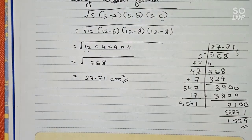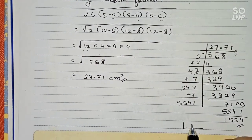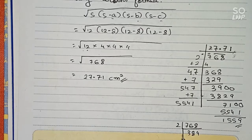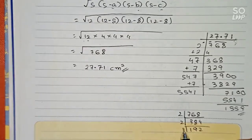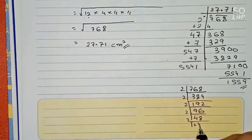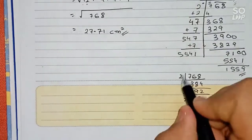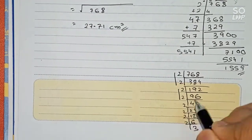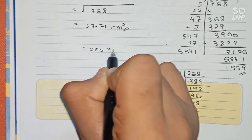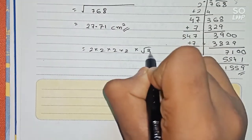One more thing — if we are not using the square root long division method, we can use the prime factorization method. So 768 divided by 2 gives 384, again by 2 gives 192, again by 2 gives 96, again by 2 gives 48, again by 2 gives 24. We count the pairs: 1 pair, 2 pairs, 3 pairs, 4 pairs — so 2 comes out 4 times, giving 2 times 2 times 2 times 2. And 3 remains inside the root, so we have 16 times root 3.